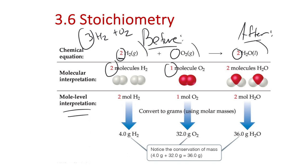We can also think at the mole level: two moles of H₂ react with one mole of O₂ to produce two moles of water. The mole-to-molecule relationship is just a conversion factor. So we can imagine reactions taking place at the molecular level, or picture the ratio of one mole O₂ to two moles H₂ producing two moles of water.